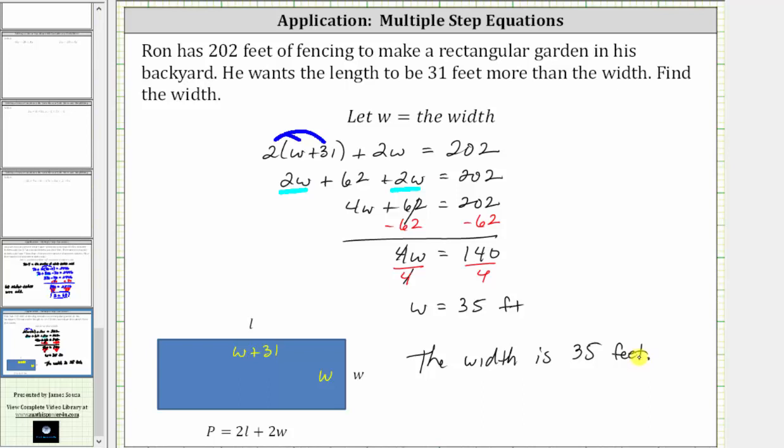We weren't asked, but if we did want to find the length, we have to substitute 35 for w in the expression w plus 31, which would give us 35 plus 31, which is equal to 66 feet. I hope you found this helpful.